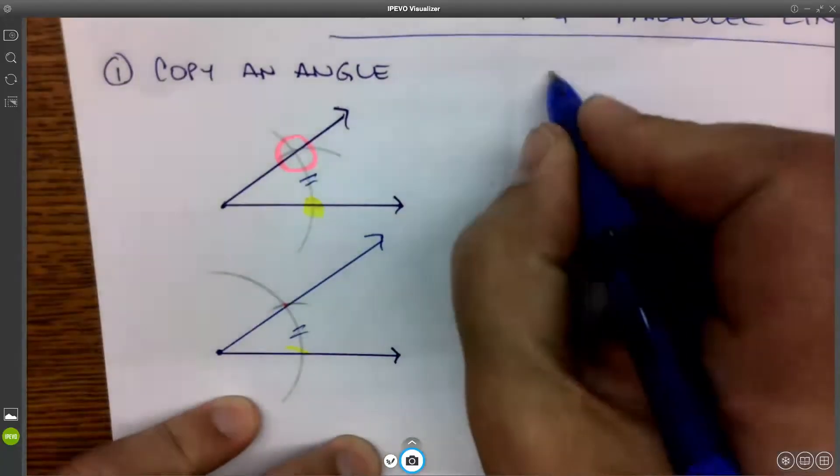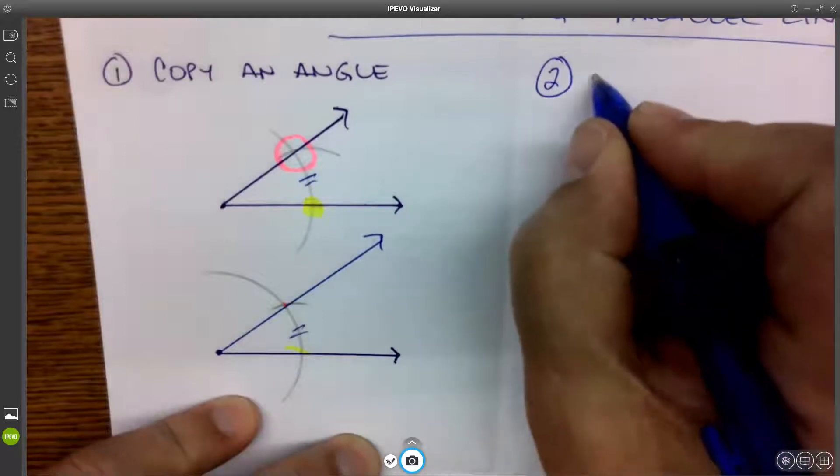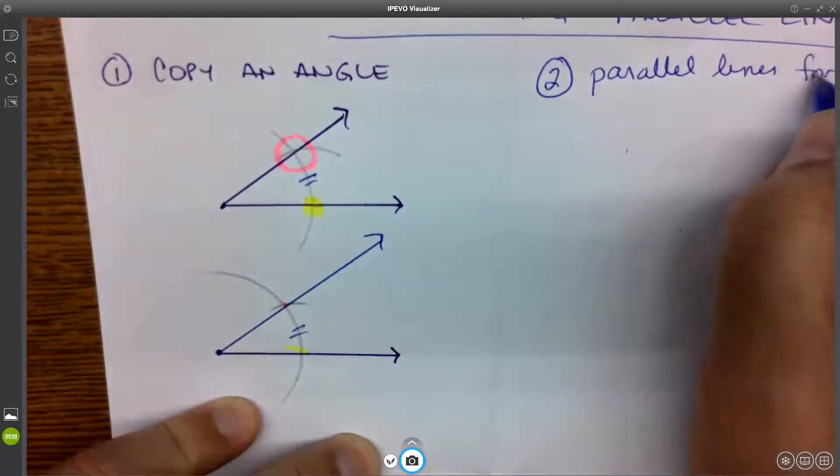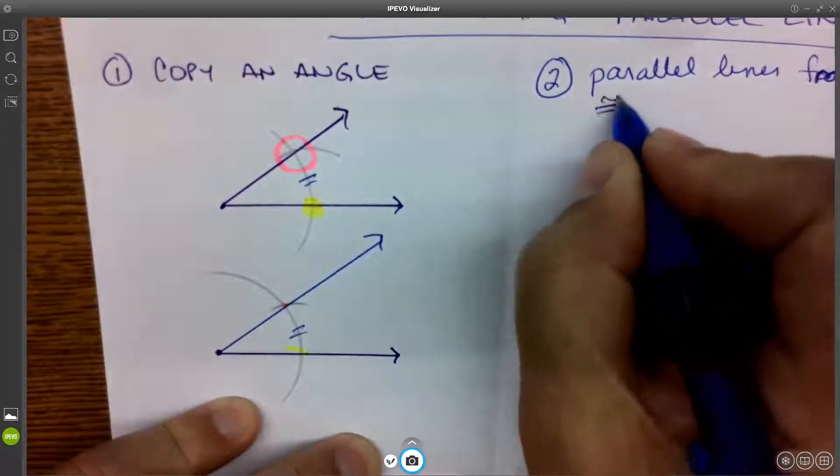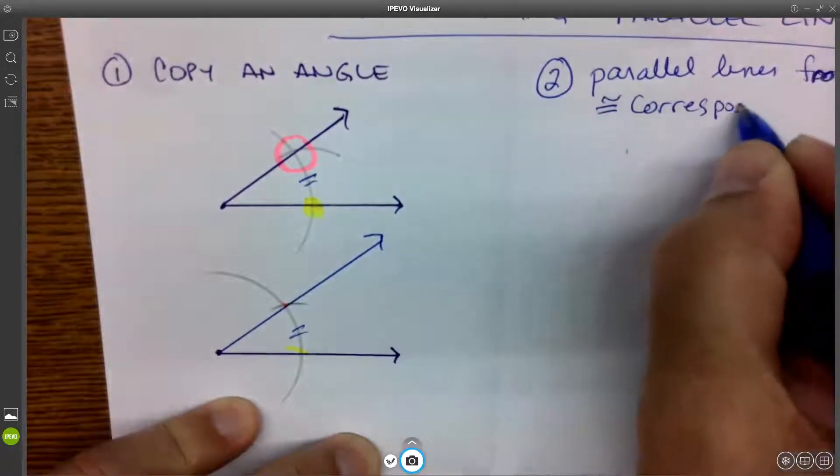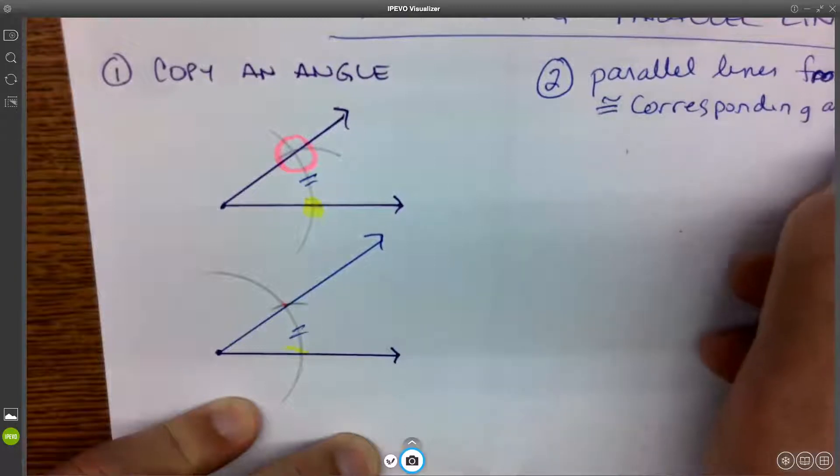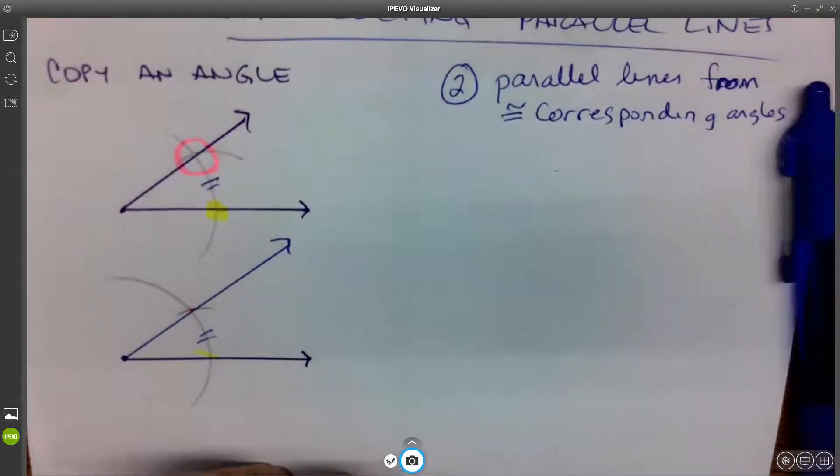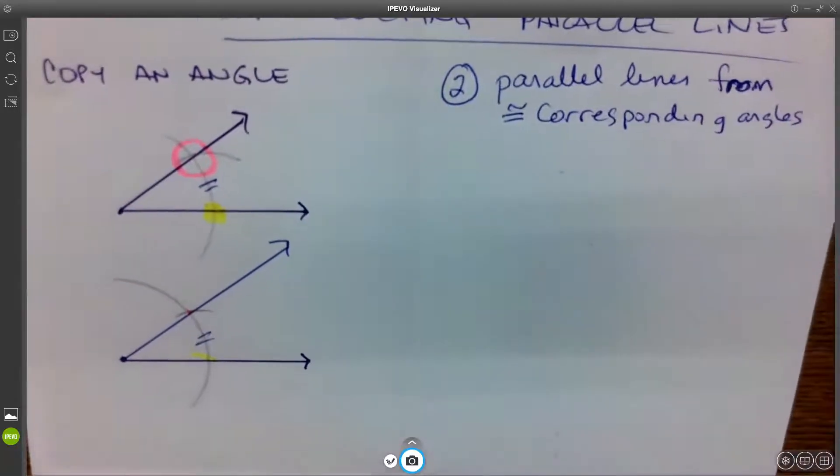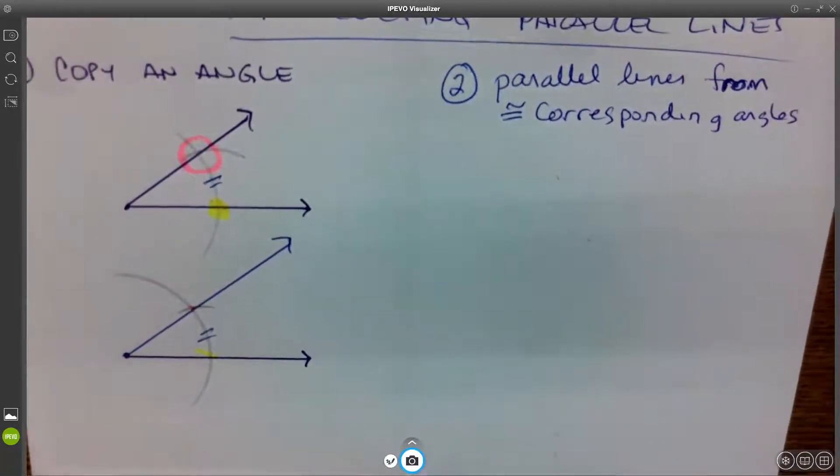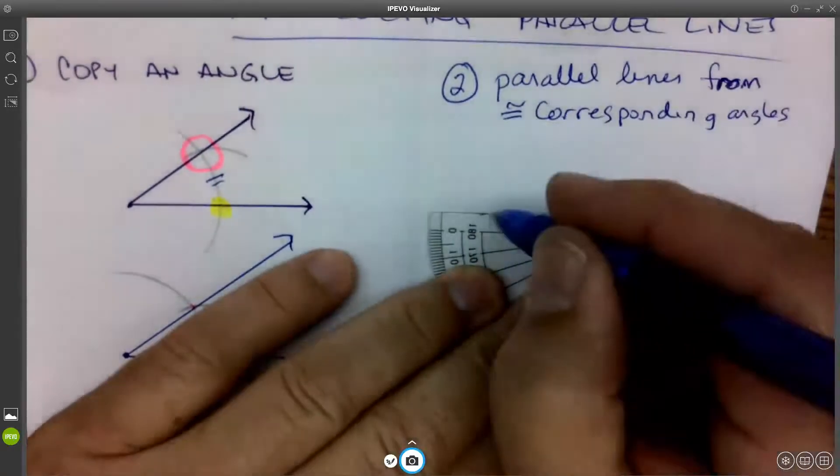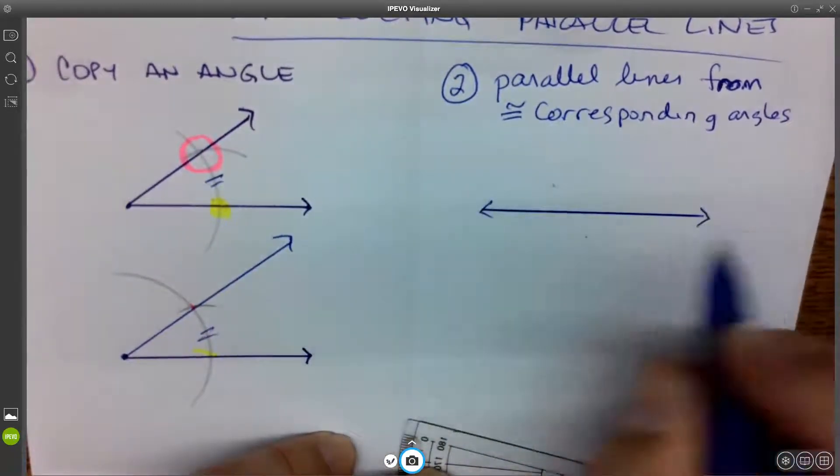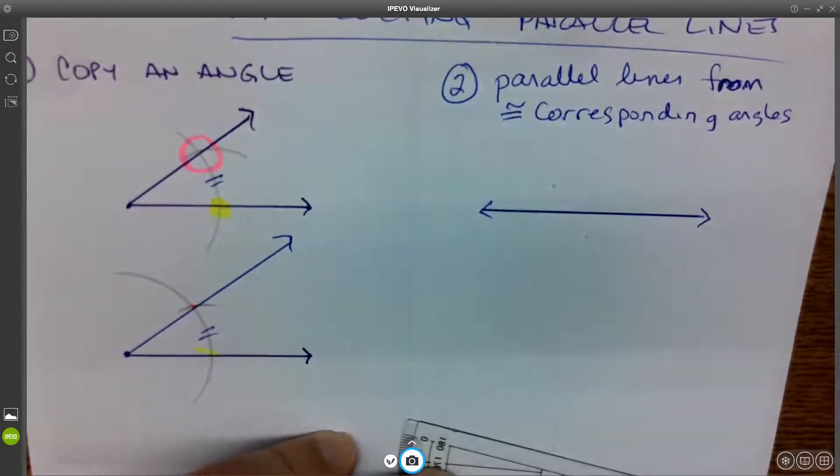So now we're going to use that same skill to create parallel lines. Parallel lines from congruent corresponding angles. If you remember this from last class, we talked about the converse of our parallel angle theorems. And we said that if two lines are cut by a transversal, forming congruent corresponding angles, then those lines will be parallel.